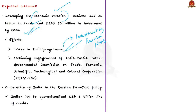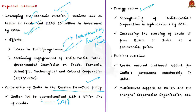The second expected outcome is regarding India's cooperation in Russia's Far East policy. In 2019, the Indian Prime Minister promised to operationalize a 1 billion US dollar line of credit for Russian Far East development projects, and measures were discussed in this summit for operationalizing this credit. The third expected outcome is regarding the energy sector: India-Russia cooperation in hydrocarbons will be strengthened by 2024, and sourcing of crude oil from Russia to India will be increased at preferential prices.